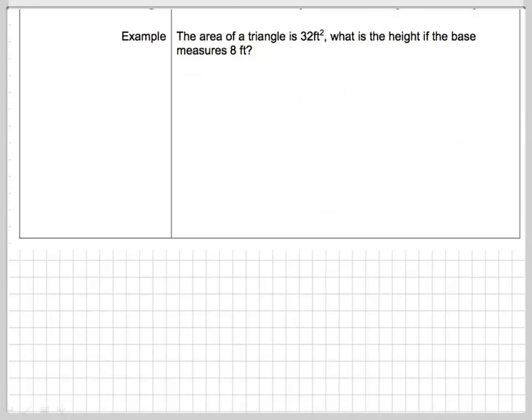Next. Okay, the area of a triangle is 32. Ooh, this is interesting. It gave us the area. The area of a triangle is 32. What is the height if the base measures 8? So we have the 8 as our base, and we don't know the height.